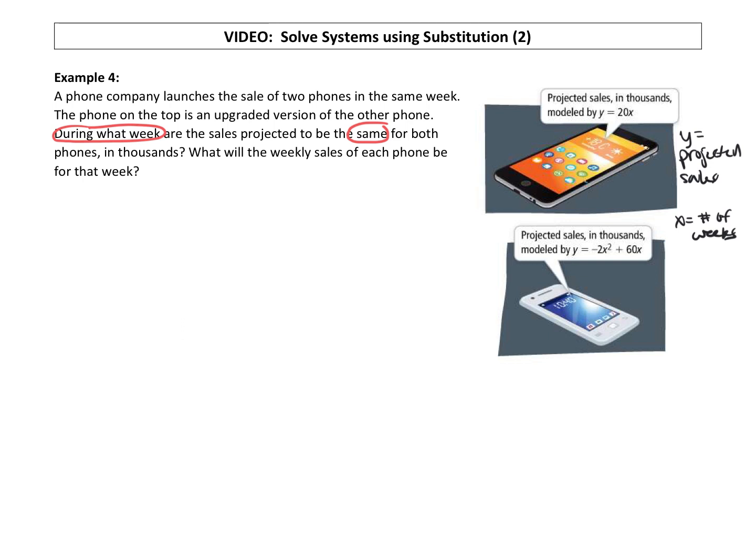Are the sales projected to be the same? So let's just go ahead and write out, we'll create a system, our top equation is y equals 20x. The other one is y equals negative 2x squared plus 60x.